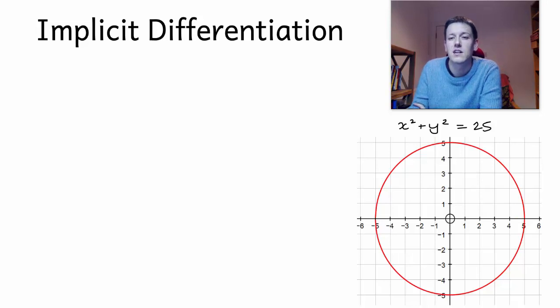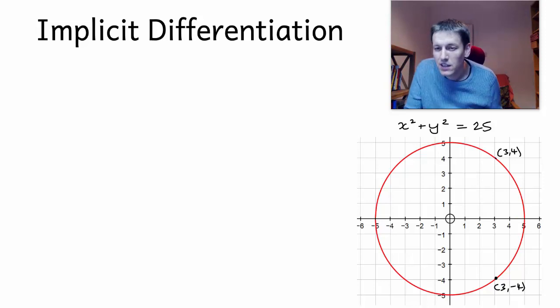It represents this circle, and there's no way of defining it just as y equals a function of x because, for example, there are points on here. I've got the point (3, 4) in the circle, and I've also got (3, -4). So if there was a function that would give us the y-coordinate from the x-coordinate, it could never work. Because if you put in x equals 3, it would have to give you both 4 and minus 4 as the output.